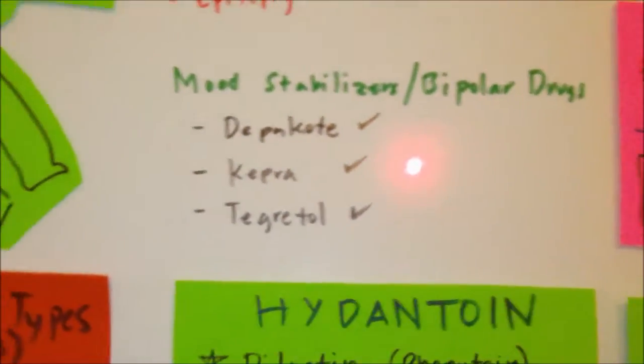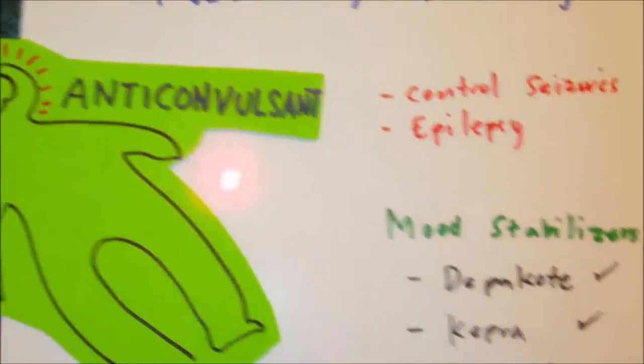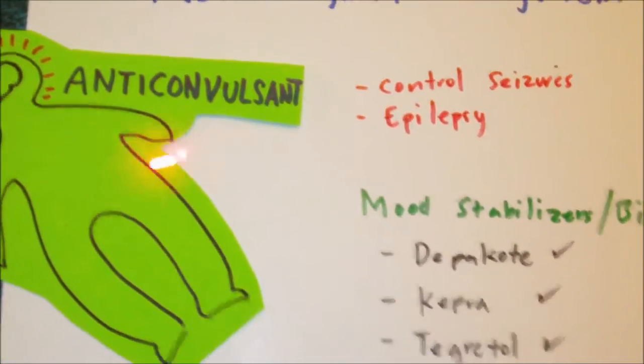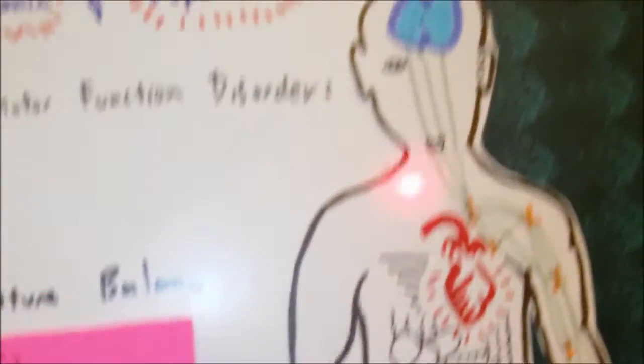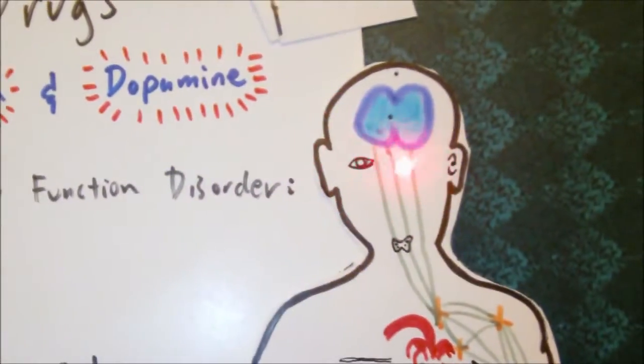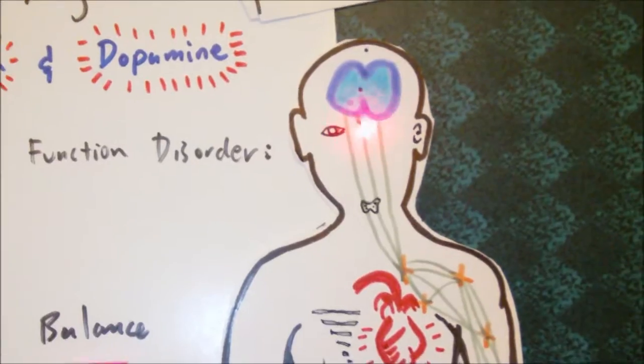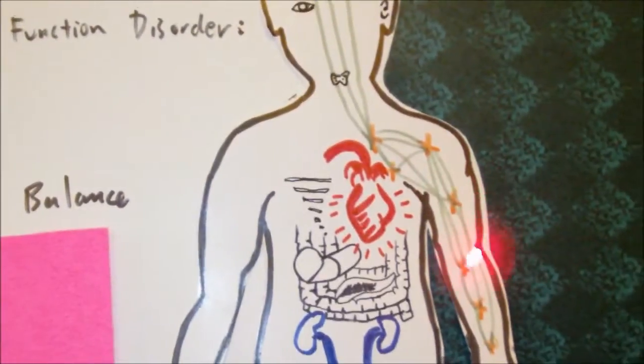Let's go back to anticonvulsants as used for seizures. Anticonvulsant medications help decrease the firing and inhibits the spread of the nerve impulses, which results in stabilization of the abnormal cells.